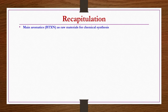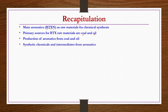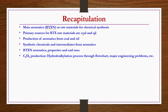We started discussion on main aromatics which can be used as raw materials for synthesis of different types of chemicals, which include benzene, toluene, xylene, and naphthalene. We also found that coal and oil are the better resources to produce such aromatics. Then we discussed production of these aromatics from coal and oil, as well as different types of intermediates and end chemicals that can be produced from aromatics.